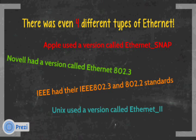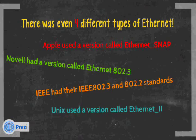Apple used a version called Ethernet SNAP. Novell had a version called Ethernet 802.3. The IEEE was still developing their standards, 802.3 and 802.2. When 802.2 came out, Novell's version wasn't compatible with IEEE 802.3. Novell even had a version called 802.2 which was compatible with IEEE 802.3 — it gets confusing. Unix used a version called Ethernet 2.